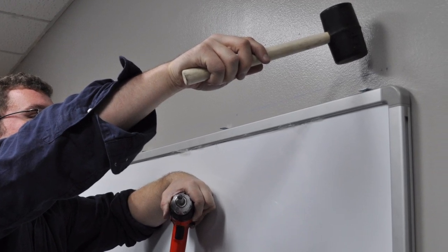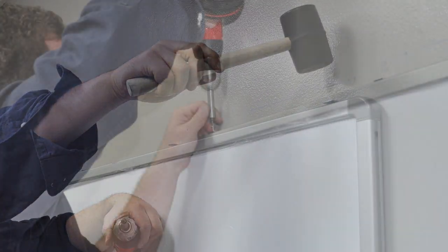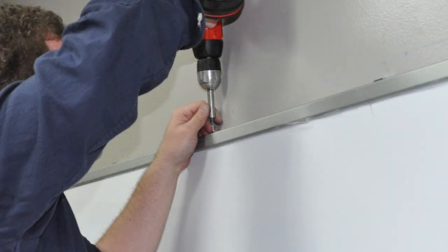Tap the top brackets down so they are touching the top of the whiteboard. Attach the brackets to the wallboard using the short screws that have been provided in your hardware pack.